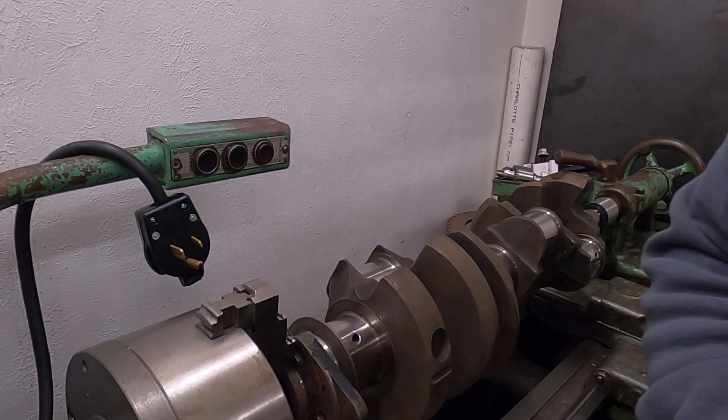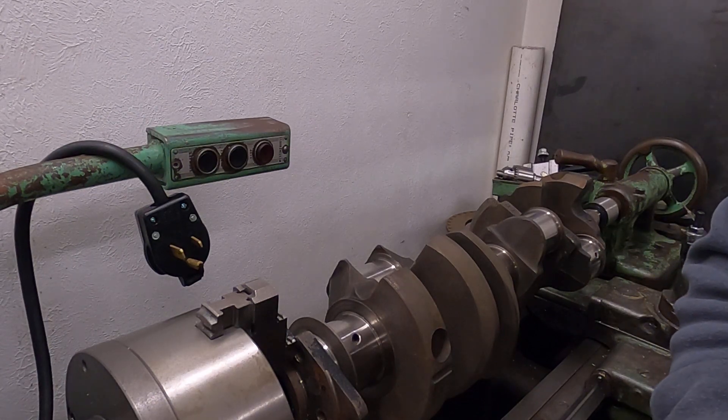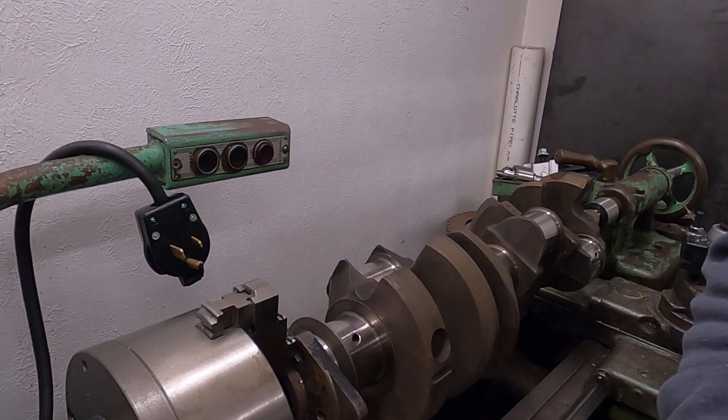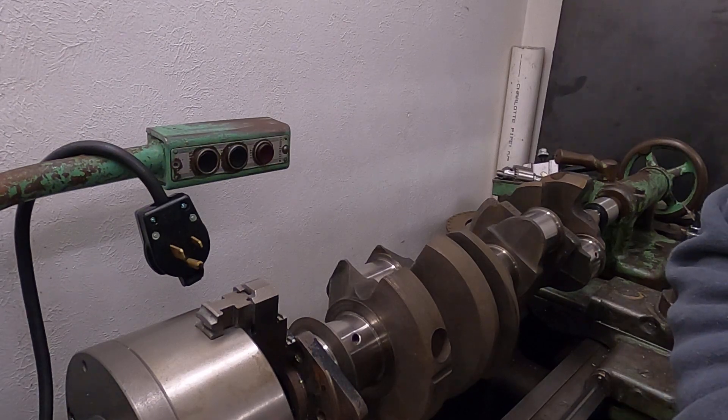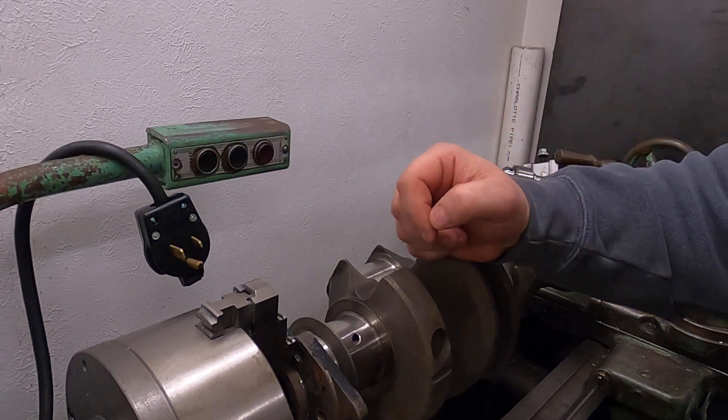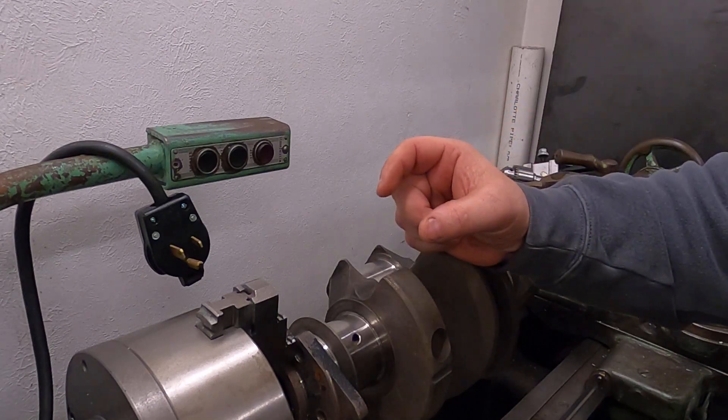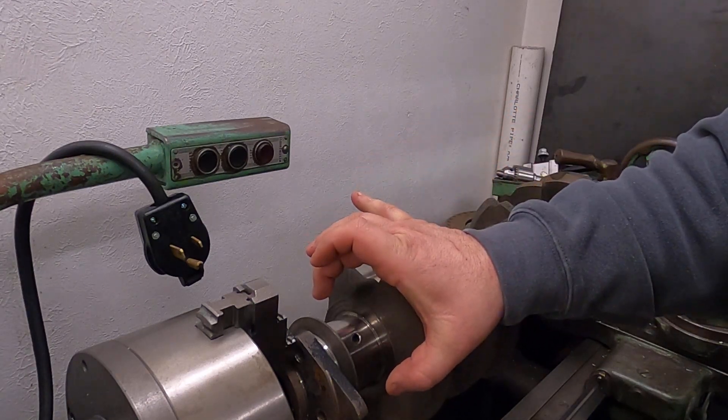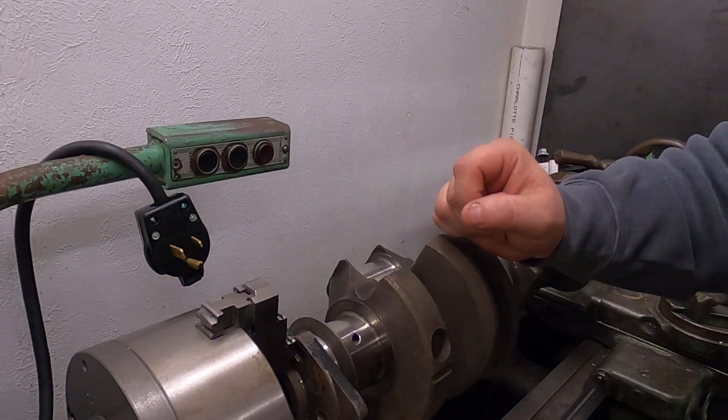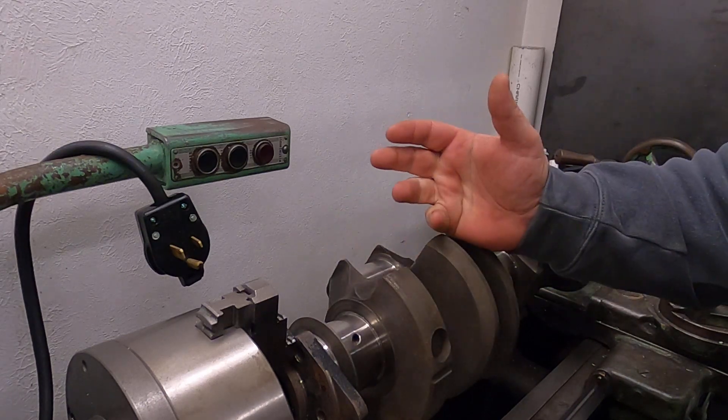Then I'm going to use my dial bore gauge in the block that is torqued down. The difference between this measurement and the measurement that's in the bearing is going to be my oil clearance.